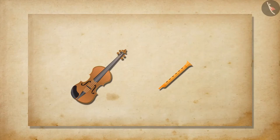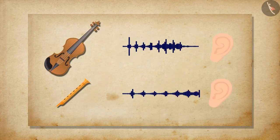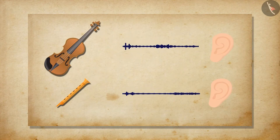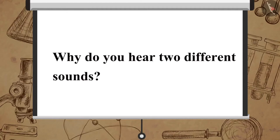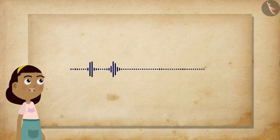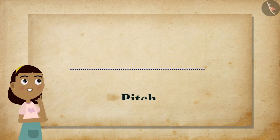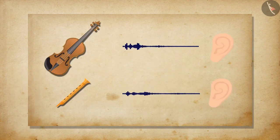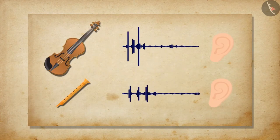Now suppose a violin and a flute are played at the same time. Both the sounds travel through the same medium, air, and reach your ears. But why do you hear two different sounds? It is because of the different characteristics of the two sounds. One of those characteristics is the pitch of the sound. The way the frequency of a sound is interpreted by the brain is called its pitch.